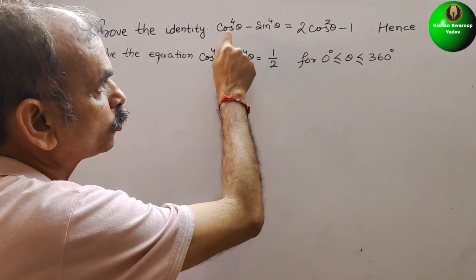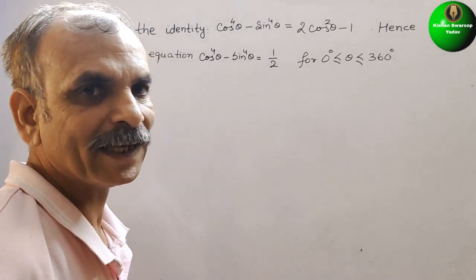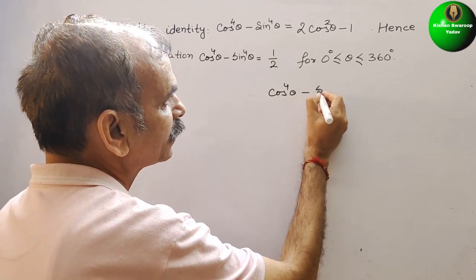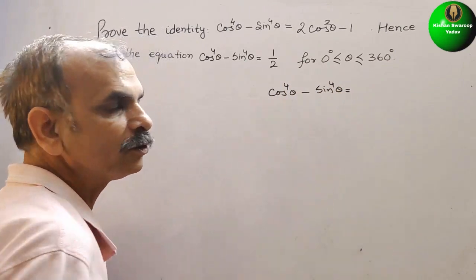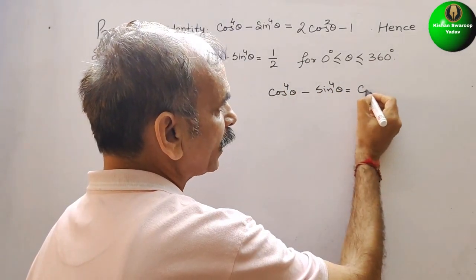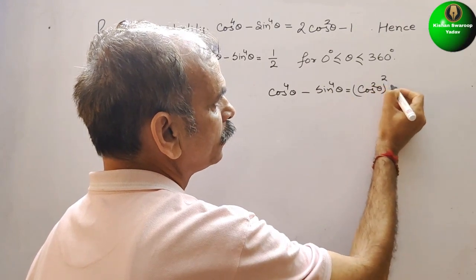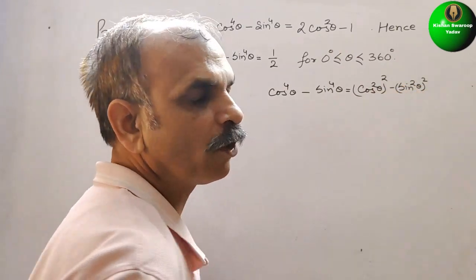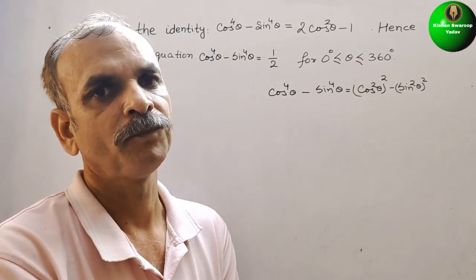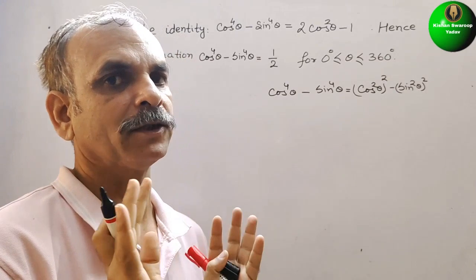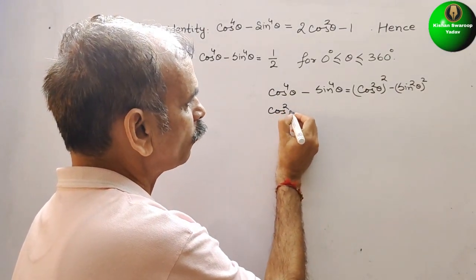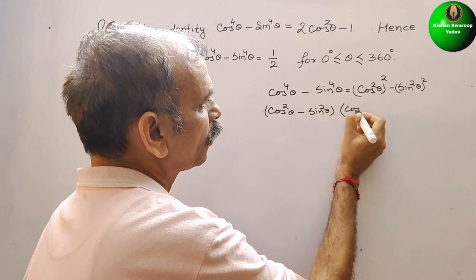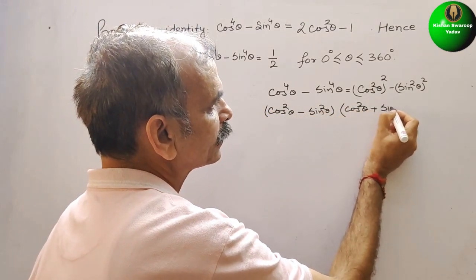We will go ahead and solve this. We have to prove it, so we will take LHS. LHS is cos to the power of 4 theta minus sin to the power of 4 theta. That is equal to cos square theta whole square minus sin square theta whole square. This is in the form of a square minus b square, which equals a minus b into a plus b. So we write cos square theta minus sin square theta, multiplied by cos square theta plus sin square theta.